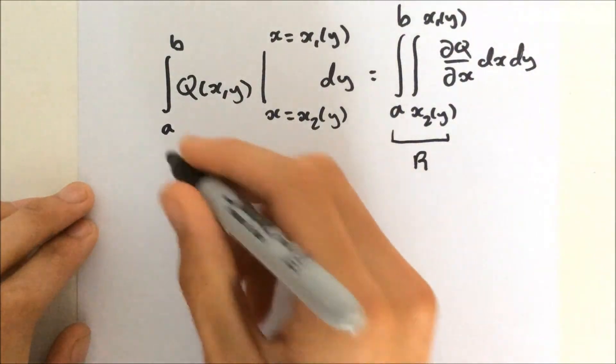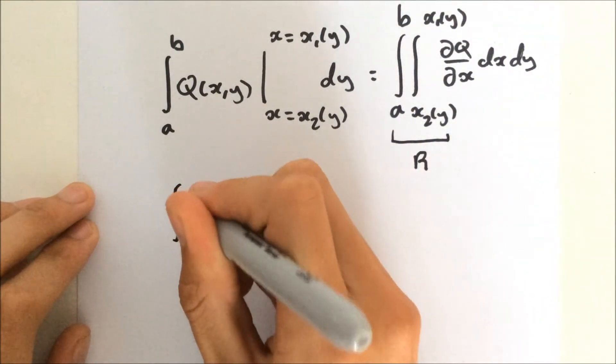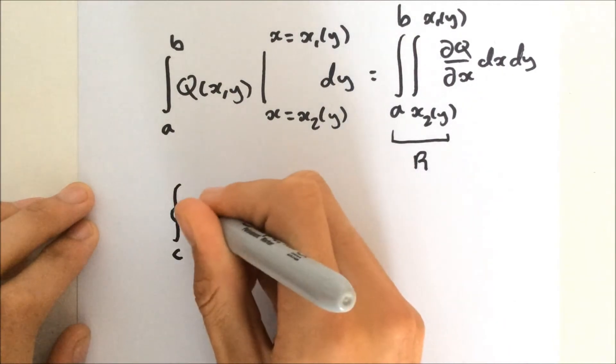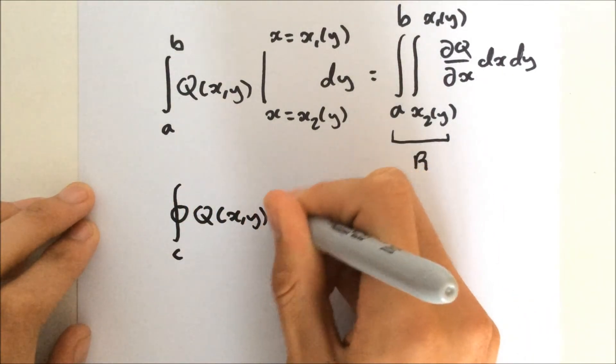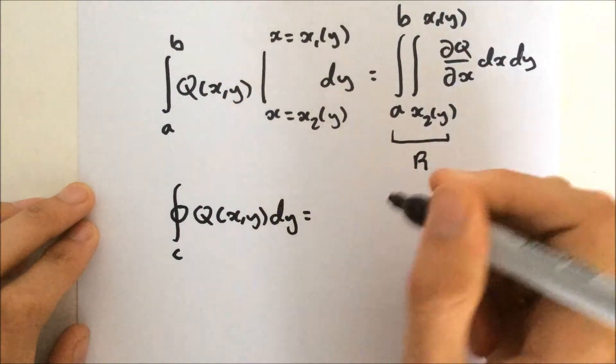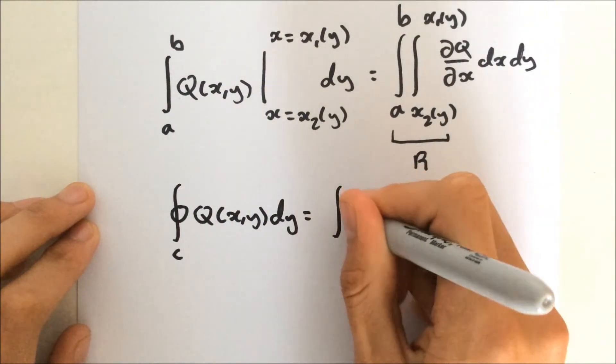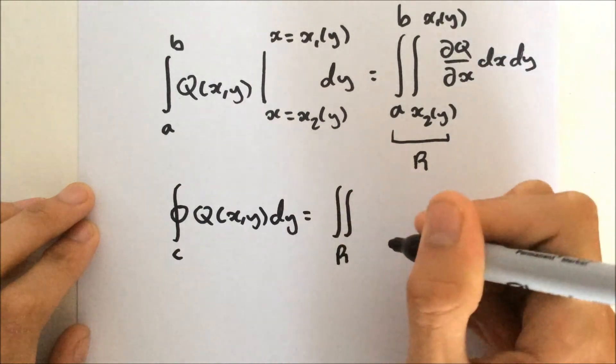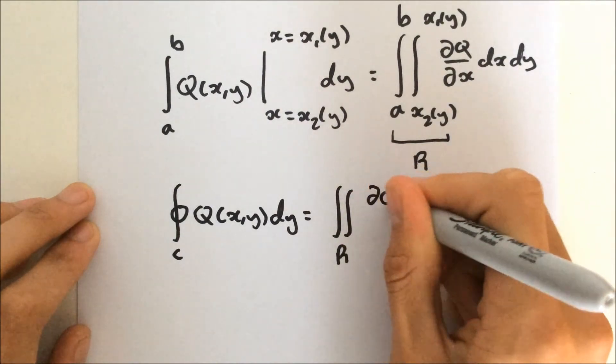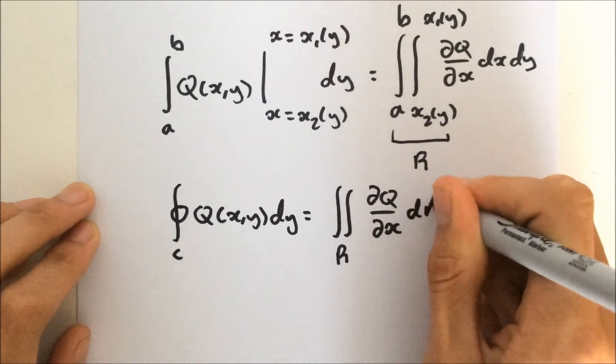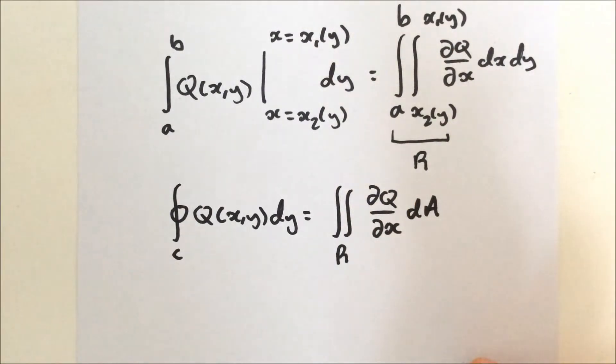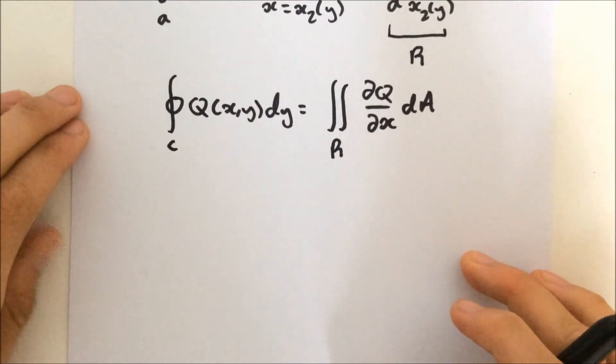And so we can finally say that the line integral over our curve C of the vector field xy dy is equal to the positive double integral. Last time it was negative, and we have dQ/dx and then dA.